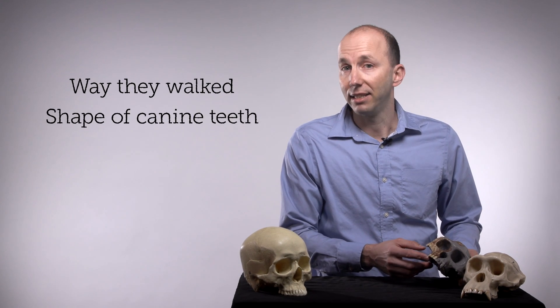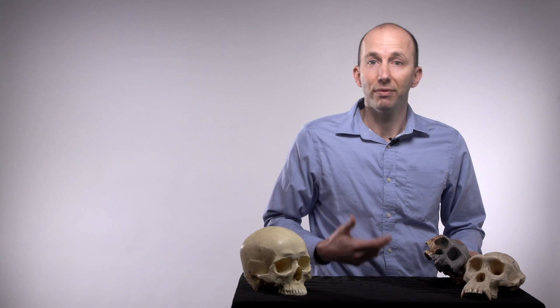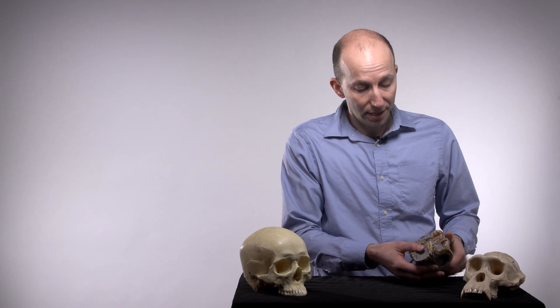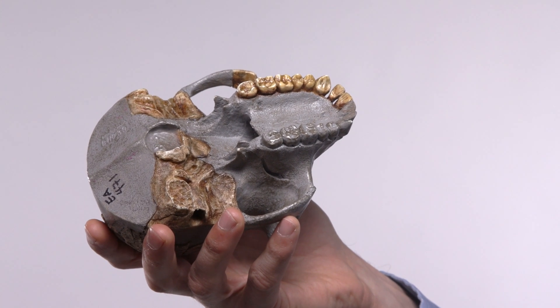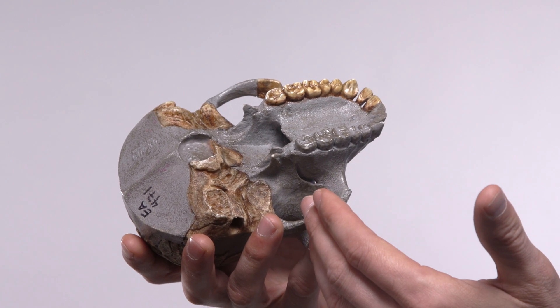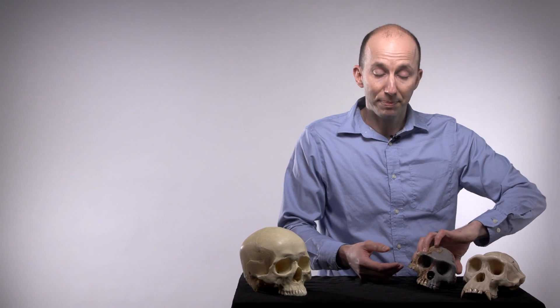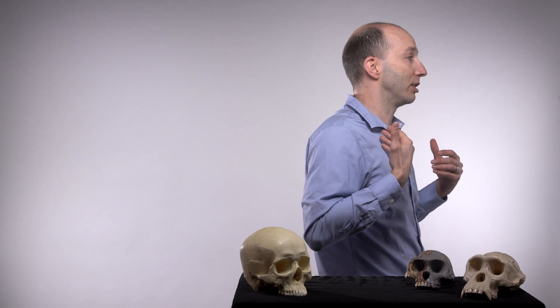Now, there are two things that separate these earliest hominins from other apes and help us know that they're in our lineage and not some other ape lineage. And that is the way they walked and the way their canine teeth are shaped. So these earliest hominins walked on two legs, like you and I do, like all hominins did. And we know that because we have fossils from the pelvis and the feet and the lower limbs, but also because we can even see evidence for this in the skull. So if we look at the foramen magnum, that's the hole in the bottom of your skull where your spinal cord comes out. It's pushed forward in early hominins like Ardipithecus. And that's because when you walk on two legs, your spinal column comes straight down out of your head. So if I turn to the side like this, you can see that my spinal column is coming straight down out of my head because I spend my life, like you do, upright.